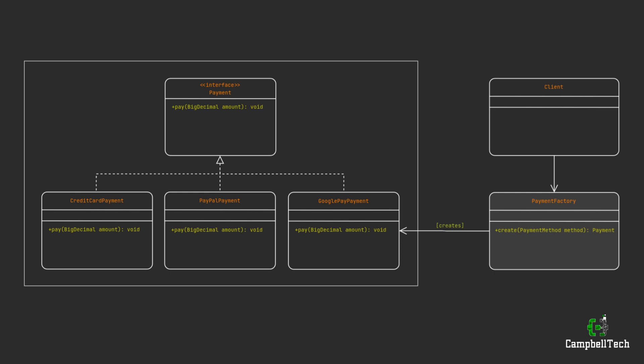Here, you'll see that we have a payment interface with a pay method. And then we have three concrete implementations, including a credit card payment, a PayPal payment, and a Google Pay payment. And then you'll also see that we have a payment factory.